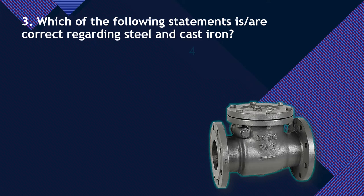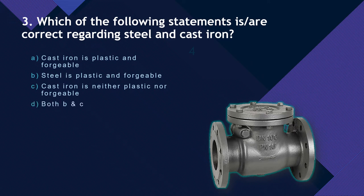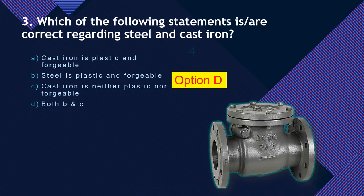Question 3: Which of the following statements is correct regarding steel and cast iron? Option A: Cast iron is plastic and forgeable. Option B: Steel is plastic and forgeable. Option C: Cast iron is neither plastic nor forgeable. Option D: Both B and C. The correct answer is Option D — steel is plastic and forgeable, and cast iron is neither plastic nor forgeable.